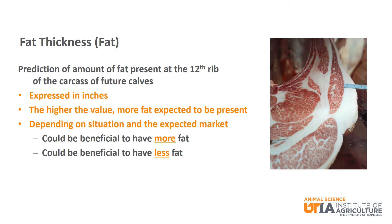Fat thickness EPD is a prediction of the amount of fat present at the 12th rib of the carcass of future calves, expressed in inches. The higher the fat value, the more fat expected to be present on the carcass. Depending on the situation and the expected market for the calves, it could be beneficial to have more fat or less fat. In both situations it is certainly possible to be too extreme toward fat or too extreme toward lean.